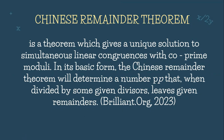In its basic form, the Chinese Remainder Theorem will determine a number t that, when divided by some given divisors, leaves given remainders — according to Brilliant Org 2003. As you can see, the Chinese Remainder Theorem gives a unique solution to simultaneous linear congruences. When we say simultaneous, they are consecutive; and when we say co-prime, it means relatively prime.